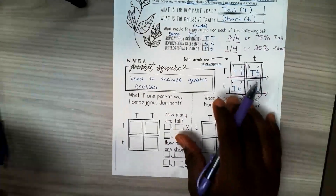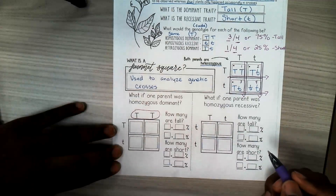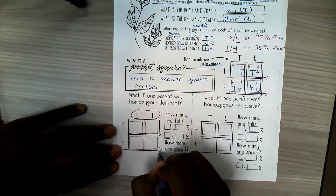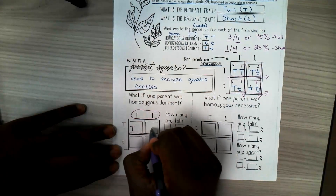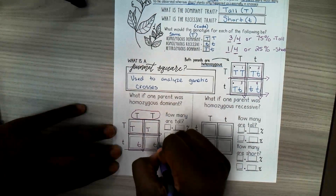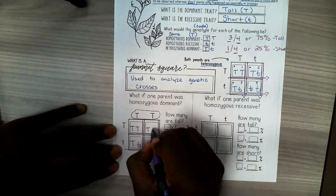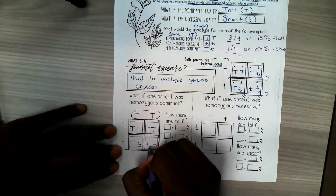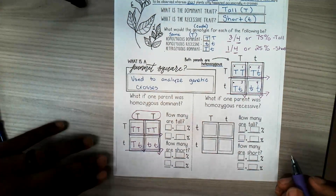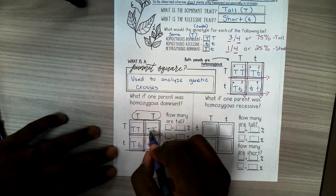Now let's change things up. Let's say one parent was homozygous dominant — that's our change. Homozygous dominant, so I'm going to do the same thing. I'm going to bring big T, big T across the top, and heterozygous big T, little t on the left. Big T comes across, little t comes across. Big T comes down, and big T comes down. So now I have big T here, big T here, and little T here.